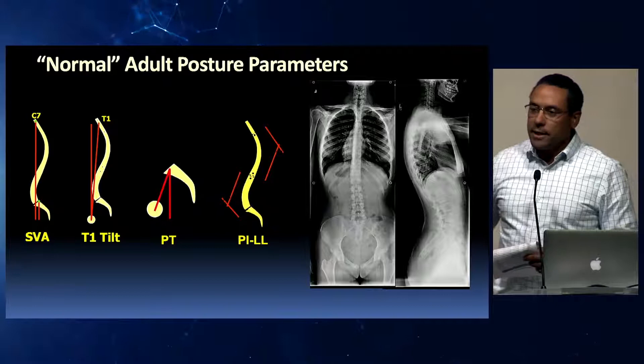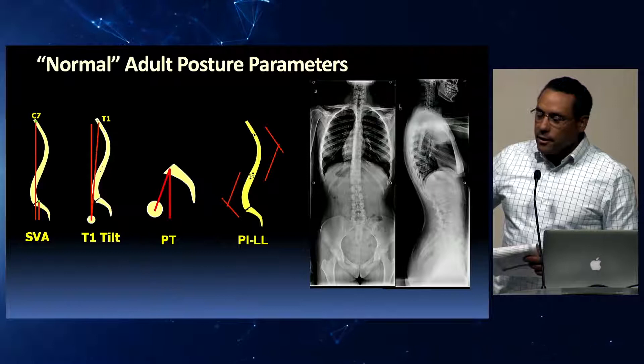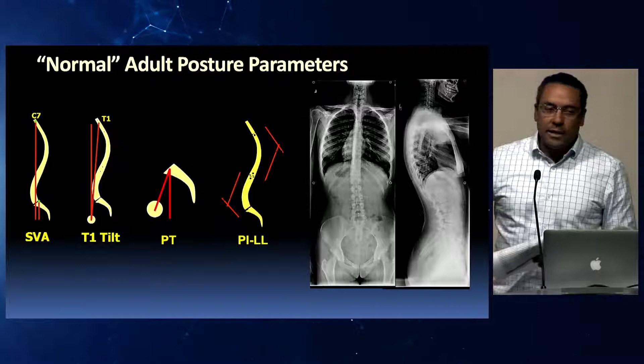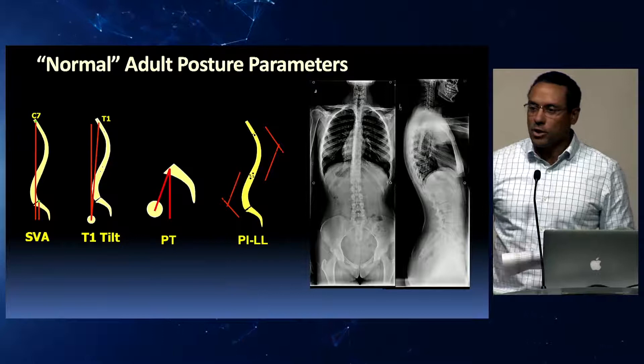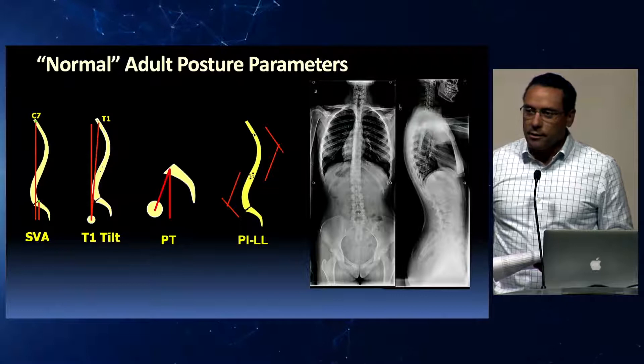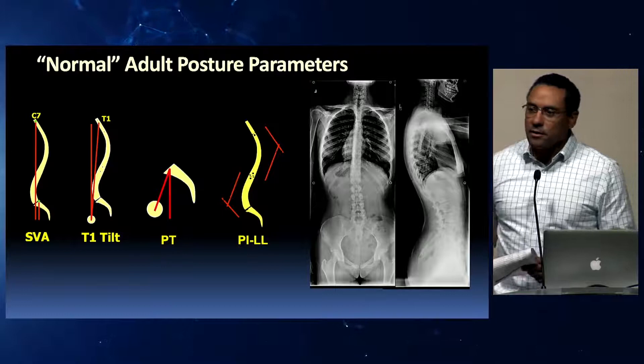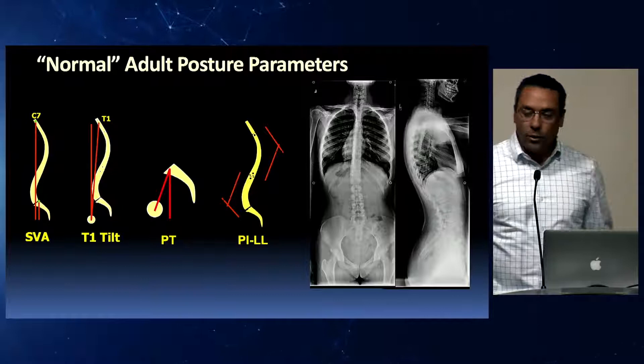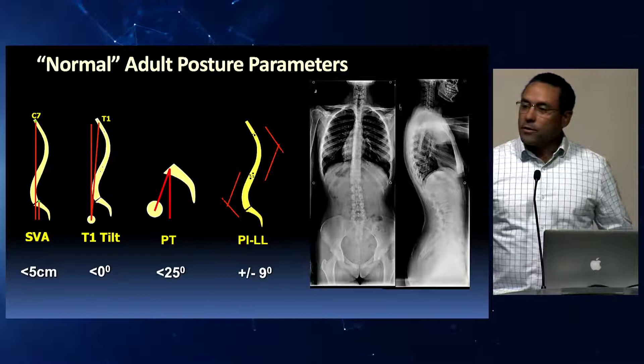And then what's PT? Pelvic tilt. And then pelvic incidence minus lumbar lordosis — the PIL. Pelvic tilt is a unique one because pelvic tilt is variable and we can all change our pelvic tilt as we do all day, every day, throughout life. Our goal pelvic tilt is less than 25 degrees — less than 20 is even better. And PIL mismatch should be plus or minus 10 degrees.